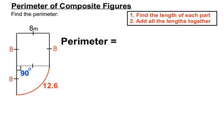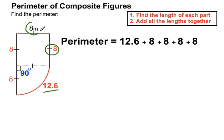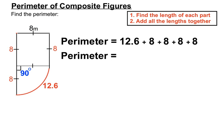For the final perimeter, we add the 12.6 for the arc, plus four 8m sides: 8, 8, 8, and 8 — lots of 8s because we had a square, so all those sides are the same. Adding all the straight bits to the curved arc length, the total perimeter is 44.6 metres.